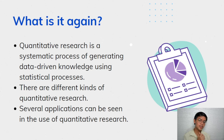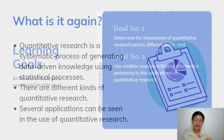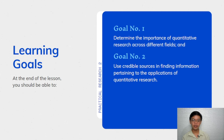We also said that quantitative research has several applications across different fields. With emphasis on that, our goal now is to determine the importance of quantitative research across the different fields. We also have another goal, which is to use credible sources in finding information pertaining to the applications of quantitative research.